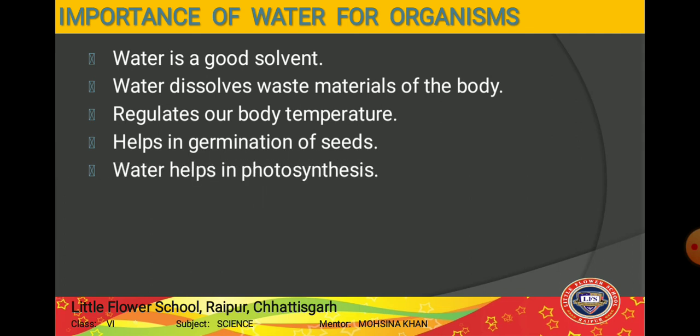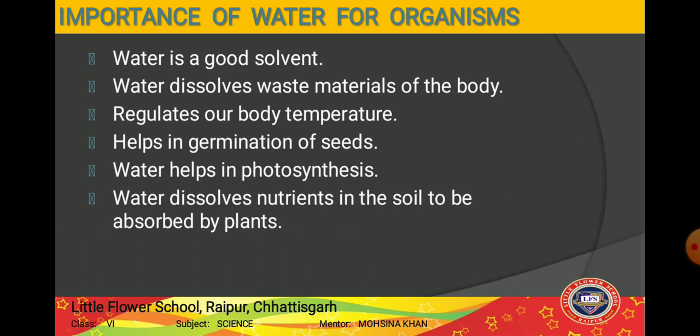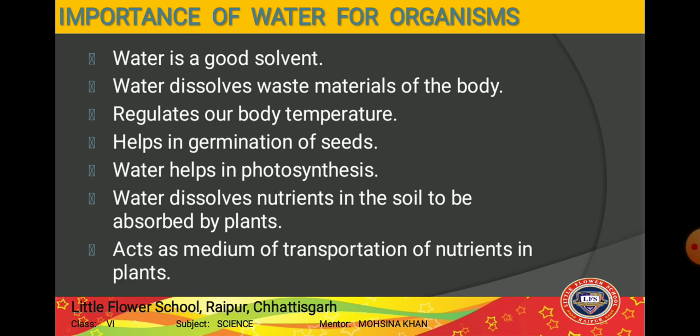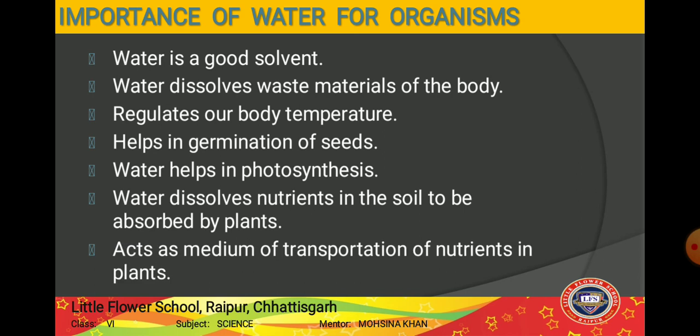Water helps in the preparation of food by plants — it helps in photosynthesis. It also dissolves the nutrients in the soil. When we water plants, all the nutrients in the soil dissolve in that water, and when the plant's roots absorb the water, the nutrients are absorbed along with it — as we studied in Chapter 7. Water also acts as a medium for the transport of minerals and other nutrients from one part of the plant to another.